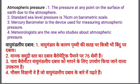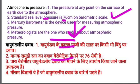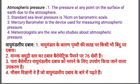The standard sea level pressure is 76 centimeters on the barometric scale. A barometer is used to measure atmospheric pressure. On a normal sea level, the pressure exerted is 76 centimeters on the barometric scale, and that is known as one atmosphere. One atmospheric pressure equals 76 centimeters on the barometric scale. The mercury barometer is the device used for measuring atmospheric pressure.